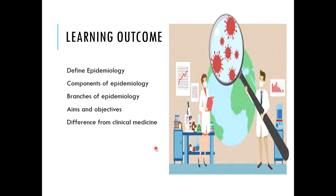Moving from this scenario to the learning outcomes of epidemiology: in today's lecture we will consider how to define epidemiology, why epidemiology is important, what are the different components of epidemiology, what are the branches of epidemiology playing a significant role in public health, what are the aims and objectives of an epidemiologist, and how it is different from clinical medicine. In this introductory lecture we will only cover definitions, components, aims and objectives, and the differences with clinical medicine.